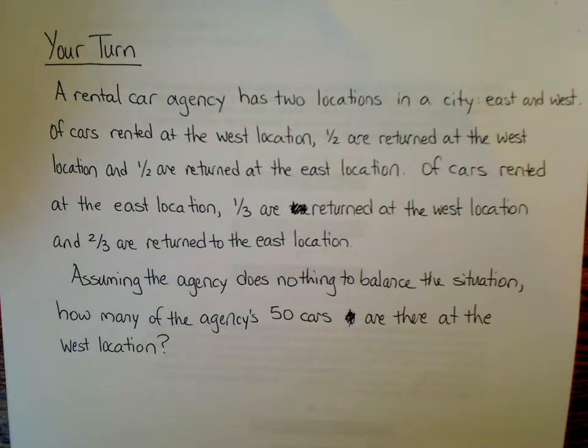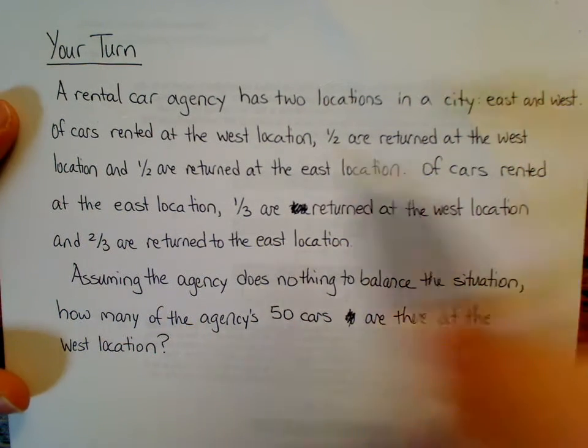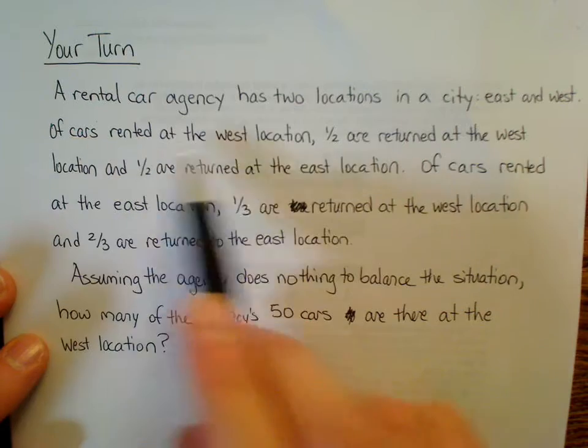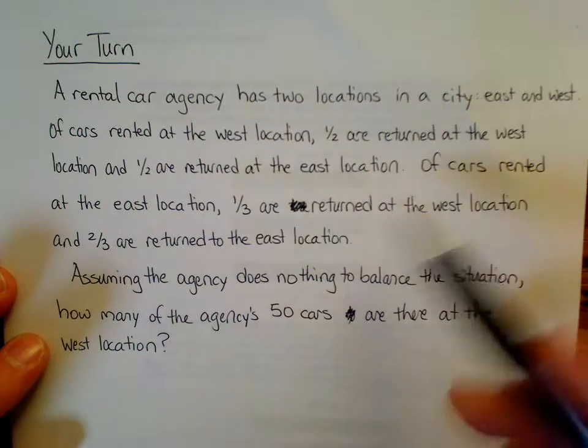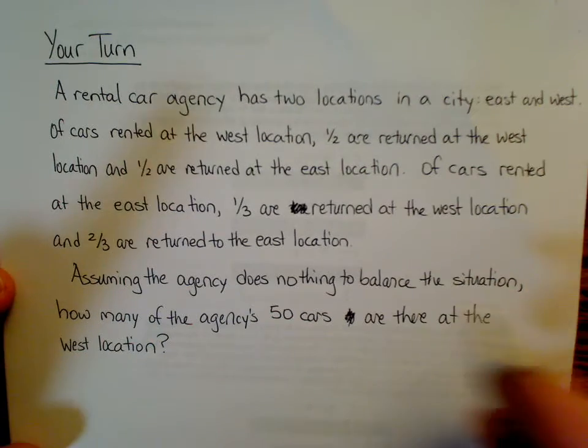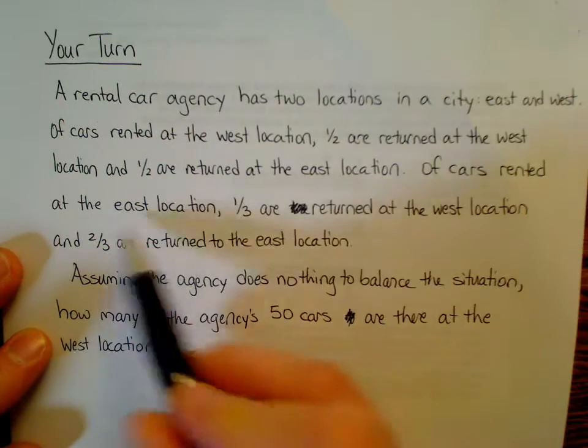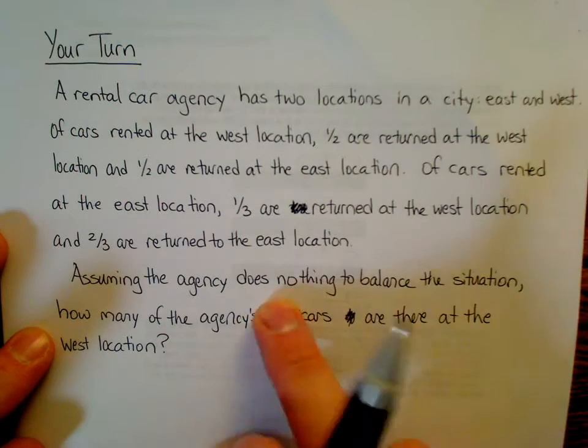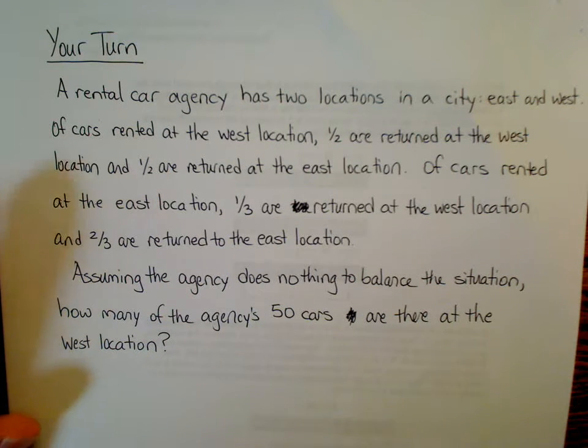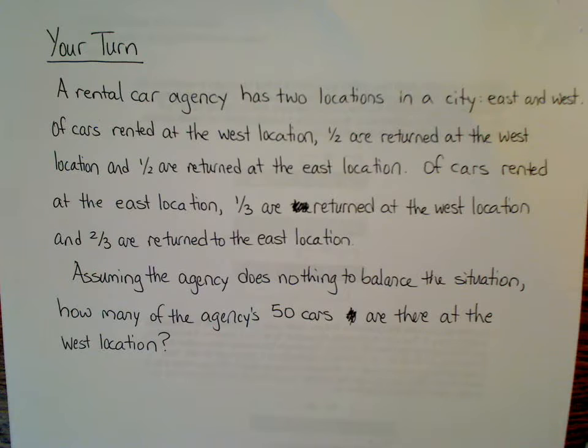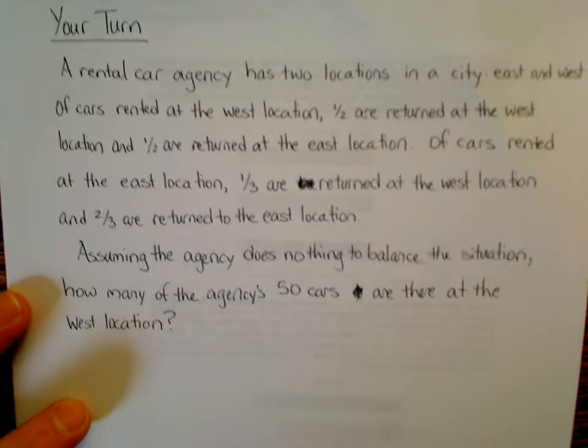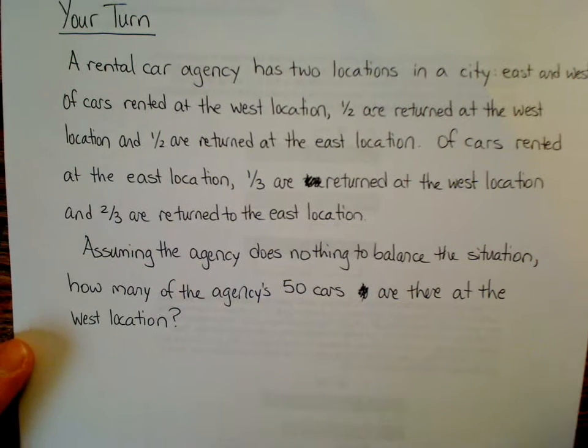This one here is wordy, but these problems always are. And I'll take a moment to read it out. Rental car agency has two locations in the city, east and west. I know, it's a small agency. Of the cars rented at the west location, half return to the west, the other half end up at the east location. It's a cross-town rental, whatever. Of cars rented at the east location, one-third are returned to the west location, two-thirds stay in the east. Assuming this agency does nothing to balance the situation. Normally, an agency is going to have some poor schmuck have to drive the cars just from one agency to the other, so they balance out. If they don't try to balance this out, how many of the agency's 50 cars are there at the west location? So, if they have 50 cars, how many end up in the west? So, pause the video.